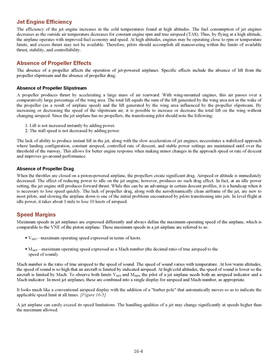Since the jet airplane has no propellers, the transitioning pilot should note: (1) Lift is not increased instantly by adding power. (2) The stall speed is not decreased by adding power. The lack of instant lift and slow acceleration of jet engines necessitates a stabilized approach where landing configuration, constant airspeed, controlled rate of descent, and stable power settings are maintained until over the runway threshold. This allows for better engine response when making minor changes in approach speed or rate of descent, and improves go-around performance.